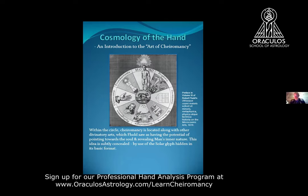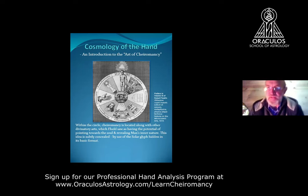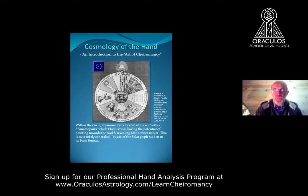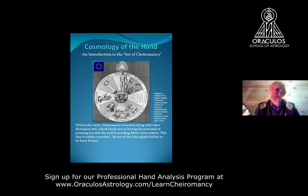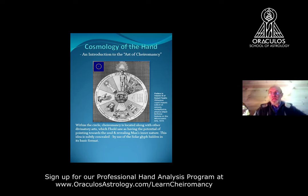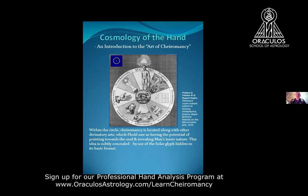Robert Fludd saw each of these divinatory disciplines as having the potential of revealing mankind's inner nature. This is subtly concealed by the whole diagram being based upon the shape of the solar glyph — the circle with all the discipline names around the circumference. In the middle is the dot, the seed of potential, the source of light that ultimately must be unfolded before we can connect to our spiritual or divine natures.